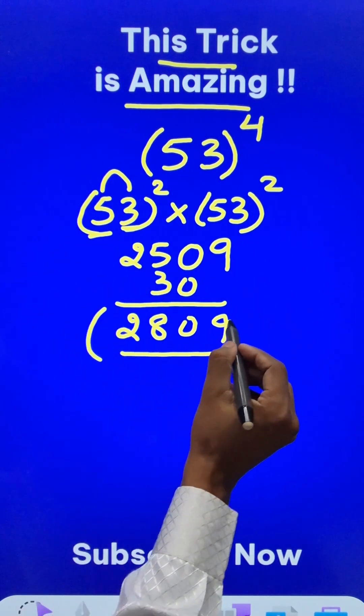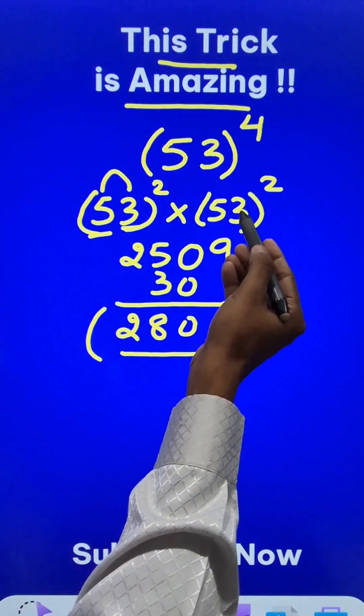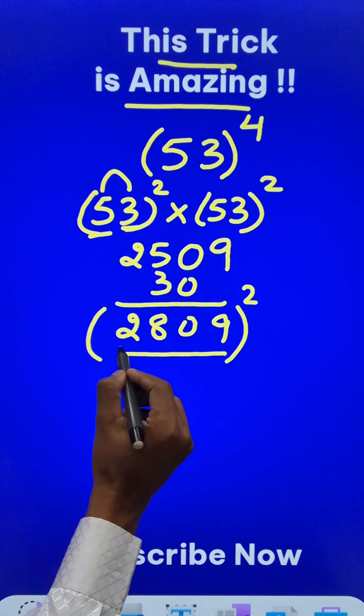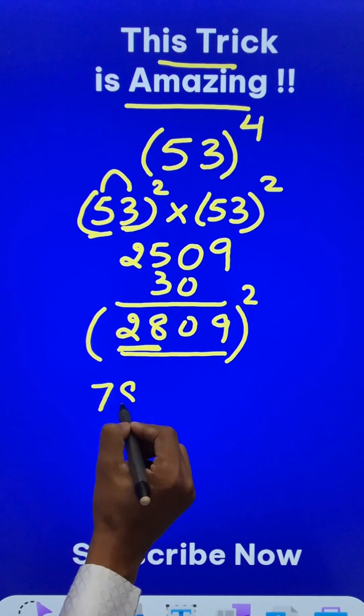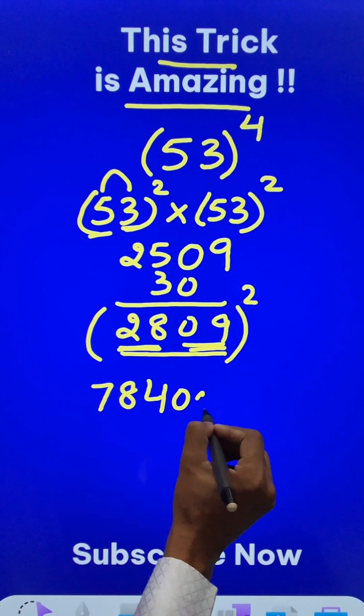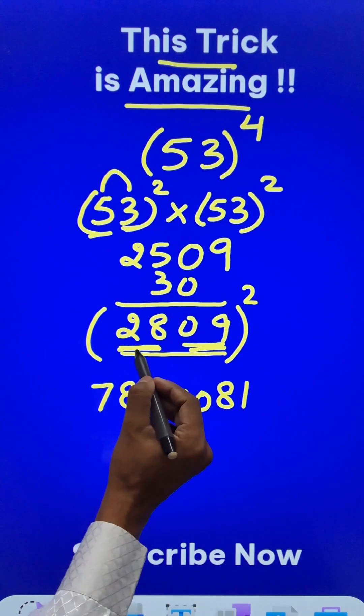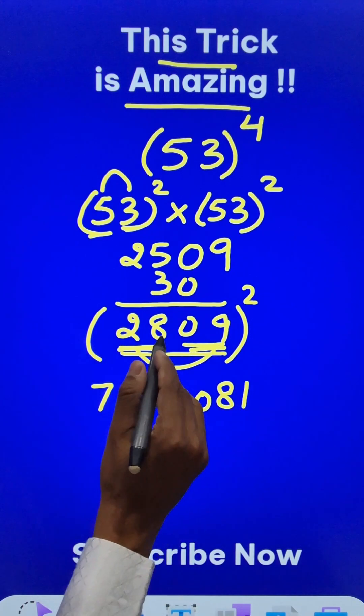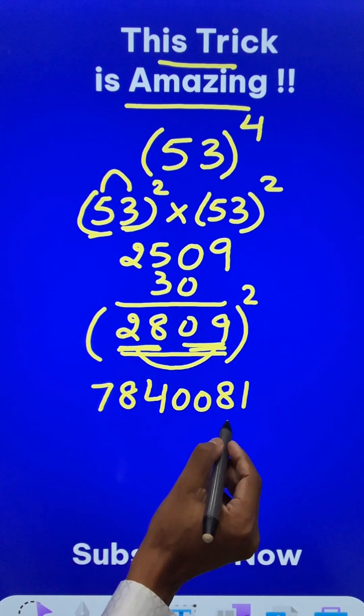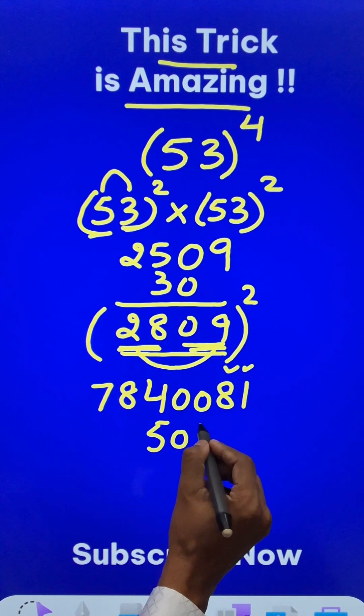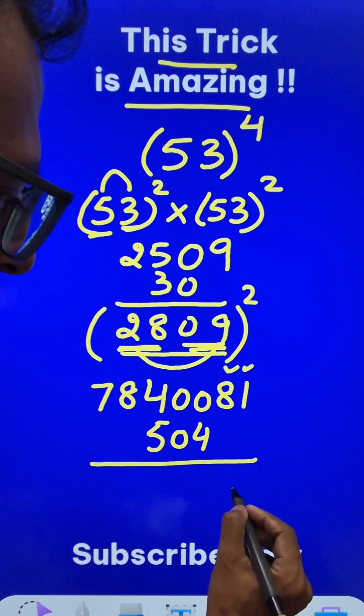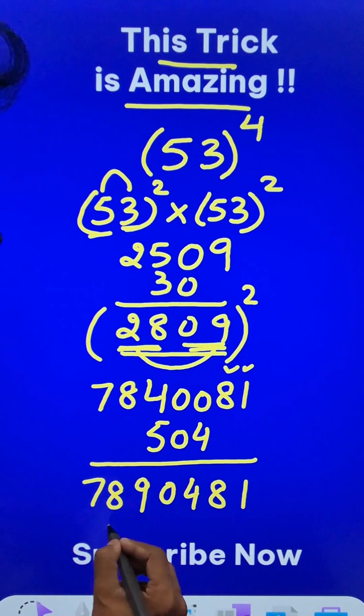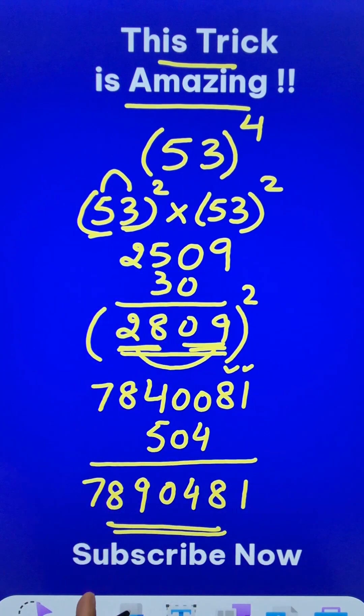Now we need to do 2809 squared, that means the square of 53 squared to get the required answer. For that, I will use the same trick again. 28 squared is 784, 09 squared is 0081, and finally 28 times 9 is 252. Double of 252 is 504. Leave 2 digits from the right hand side and write 504 here and just add vertically, you will get 1840987. Now pick up the calculator and check your answer, is it true?